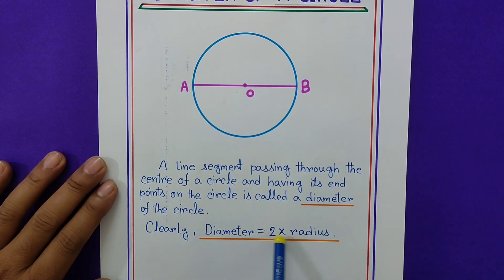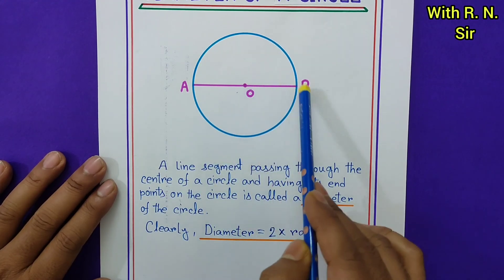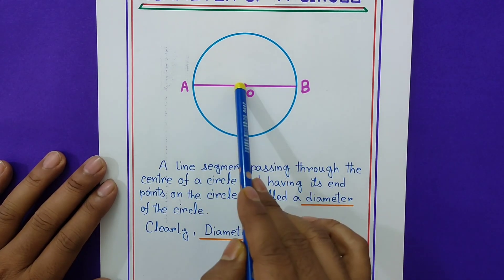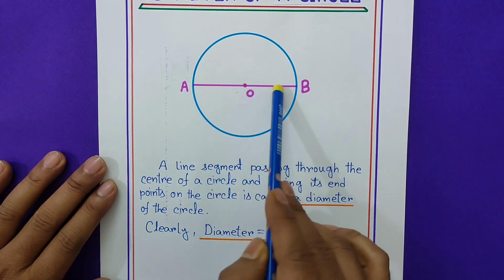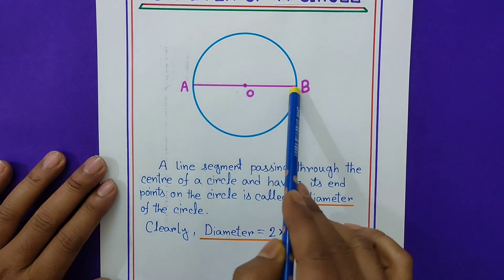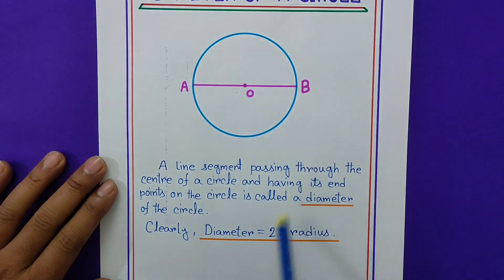Clearly, diameter equals 2 times radius. Why 2 times radius? Because OA distance and OB distance are both the same and these are the radii. If we join these two lines, we get AB. So AB is the diameter of the circle — that's why this is the formula.